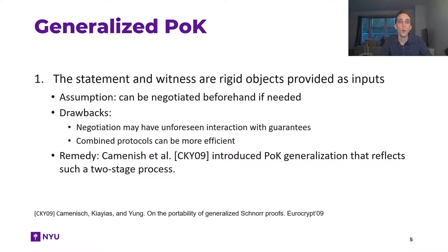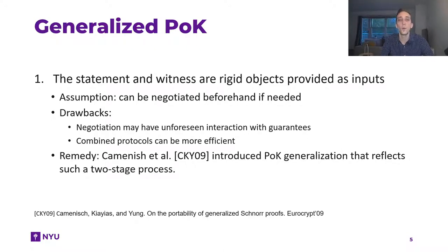First, we observe that in a proof of knowledge the statement and witness are essentially rigid objects that are just given as inputs to the various parties. The underlying assumption is that if that should not be true, we can first run some kind of negotiation protocol where we negotiate on the statement, and then run the general proof of knowledge.